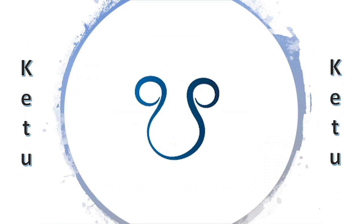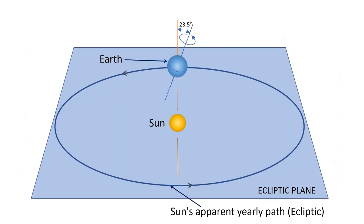To understand what these nodes or intersection points are, we first need to understand how Earth and Moon's orbital planes look like. Let's first define what the ecliptic is — the Sanskrit word for ecliptic is Appamandala. The Earth is tilted at an angle of about 23.5 degrees to its orbital plane, rotates around its axis, and also revolves around the Sun — taking 24 hours to rotate and about 365 days to complete one revolution. The imaginary plane containing the Earth's orbit around the Sun is called the ecliptic plane, shown with a light blue rectangle on the screen. The Sun's apparent path through the sky lies in this plane and is called the ecliptic, as pointed out in the diagram.